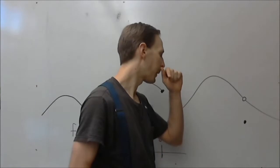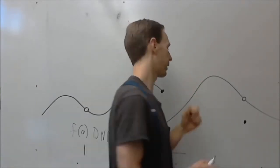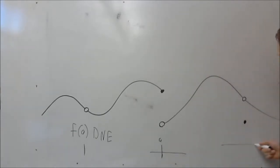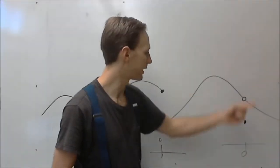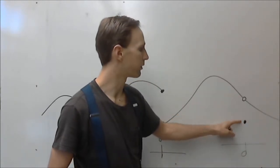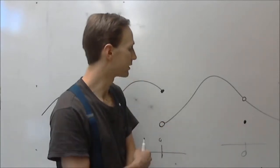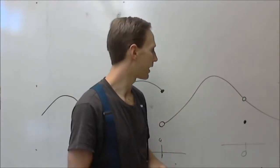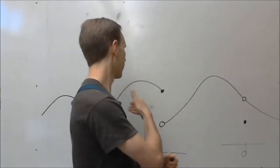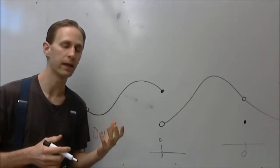The third discontinuity satisfies both conditions the other two did not. f of a exists, and the limit as x approaches a exists. But they're not the same y value. So f of a does not equal the limit as x approaches a. That gives us the three circumstances under which a function will be discontinuous at an x value.